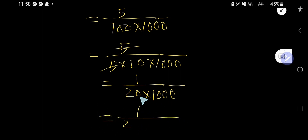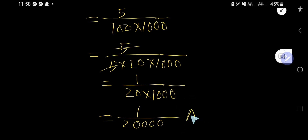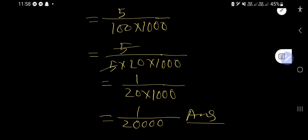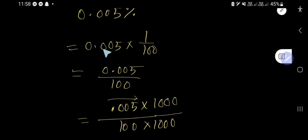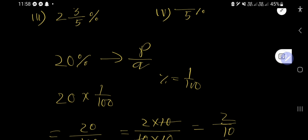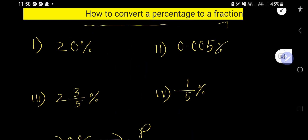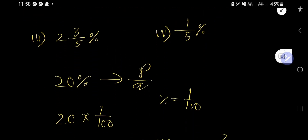So the result is 1 over 20,000 — that is one followed by four zeros in the denominator — and this is the fractional form of 0.005%.